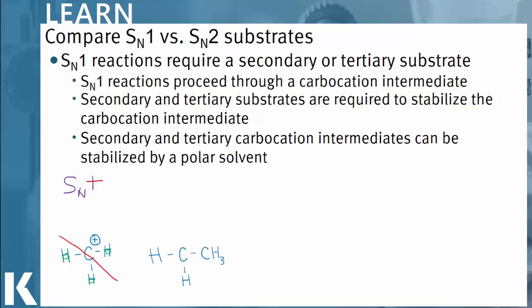Our second substrate is a primary carbon. This is primary because the middle carbon that has our positive charge is attached to one carbon atom and then two hydrogen atoms. There is more electron density to support our carbocation than a methyl, indicated with big clouds around our methyl group. However, this is still not enough to support our inherently unstable carbocation.